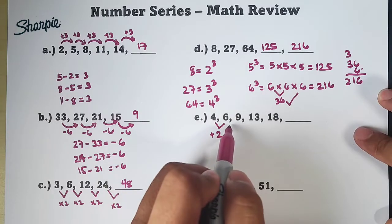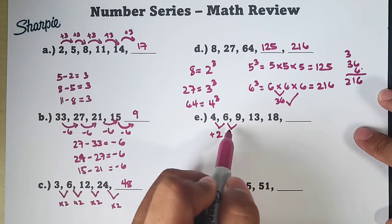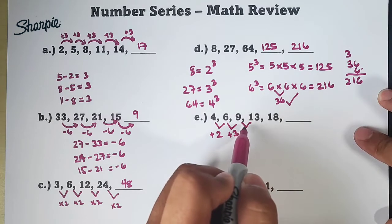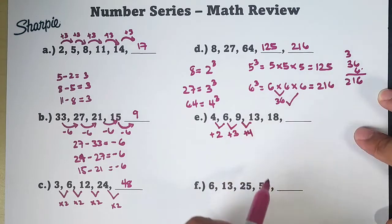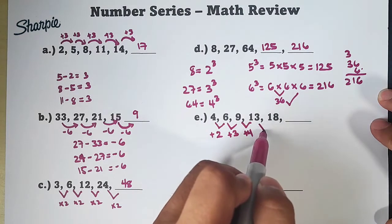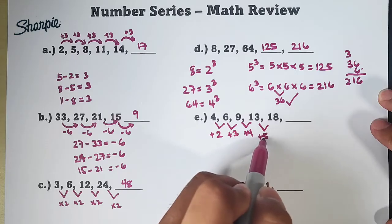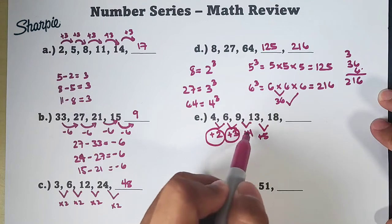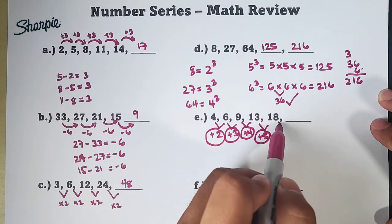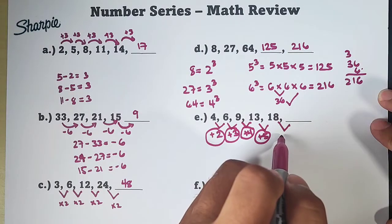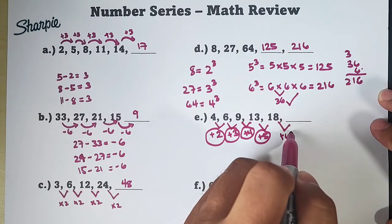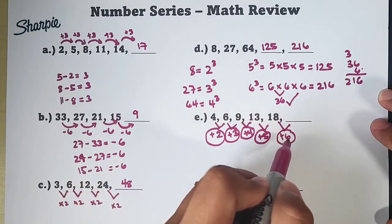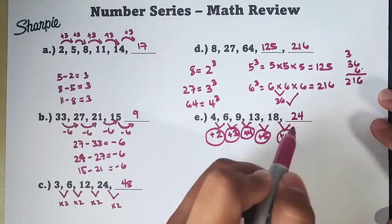Ito naman, from 6 to 9, mag-add tayo ng 3. Dito naman, from 9 to 13, plus 4. Sana nakikita niyo yung pattern natin, guys. Dito naman ay plus 5. So, kung mapansin niyo yung pattern natin, we have plus 2, plus 3, plus 4, plus 5. Ibig sabihin, to get to the next term, you need to only add 6 para makuha mo yung next term natin. Which is 18 plus 6, that would give us the answer of 24.